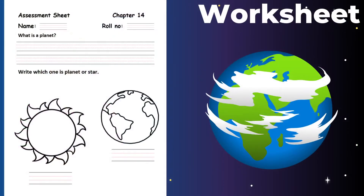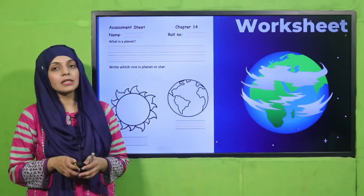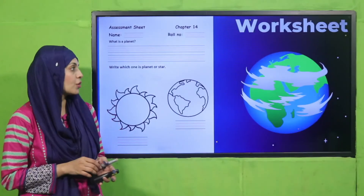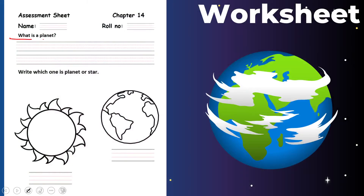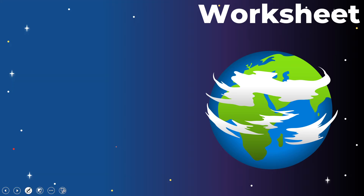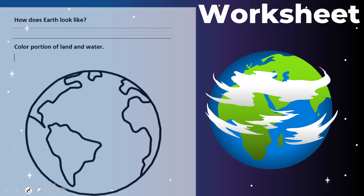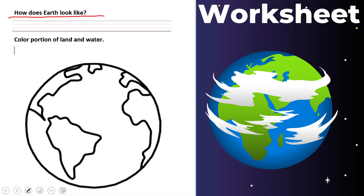Now is the time for practice. You need to download this worksheet from the description box below this video, or you can get it in print form from your teacher. You have to write which one is a planet or a star in the given space, and color the portion of land and water on earth.